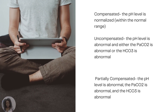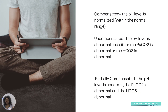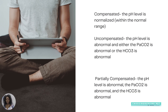Now for step three — compensation levels. When it's fully compensated, the pH is normalized, meaning the pH will actually be within the normal range. Uncompensated means all values — the pH, CO2, and bicarb — are outside the normal range. Partially compensated is where the pH is abnormal and the CO2 or bicarb is also abnormal. This is why memorizing normal ranges is so important.